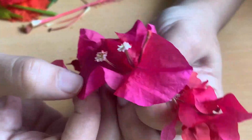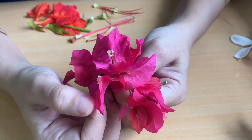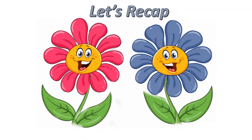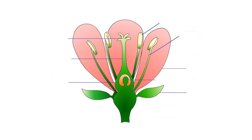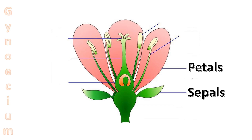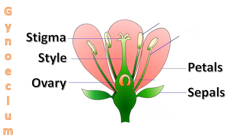So that was all about the world of flowers and the structure of a typical flower. You can pause the video and draw the diagram now. To recap: the green part protecting the bud is the sepals; the second whorl is the colorful petals; the third part is the female reproductive part called the gynoecium, which contains three main parts — ovary, style, and stigma. The ovary contains the female gametes called ovules.